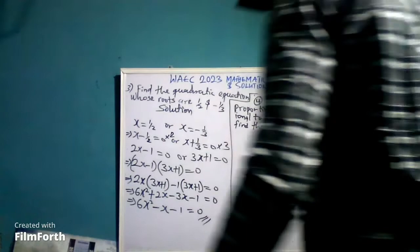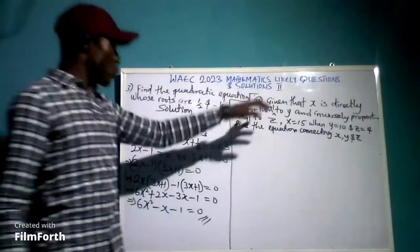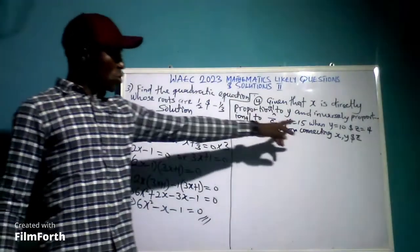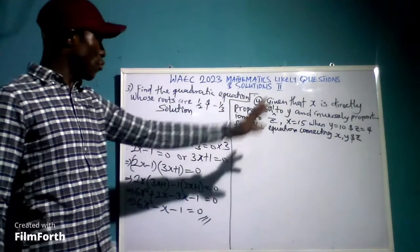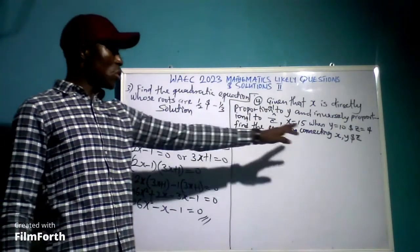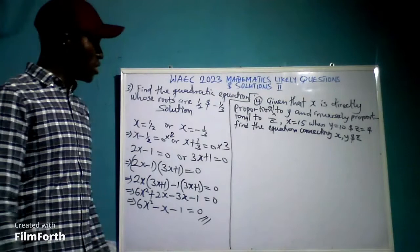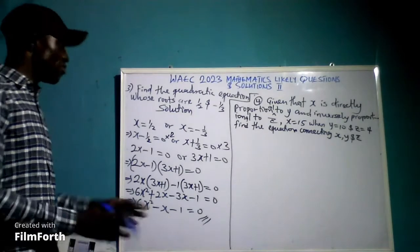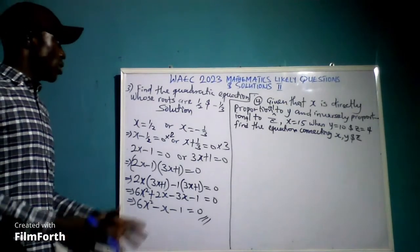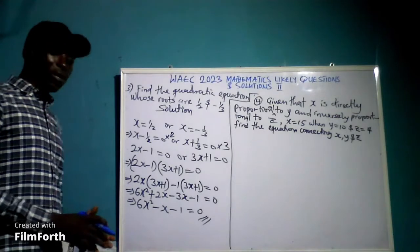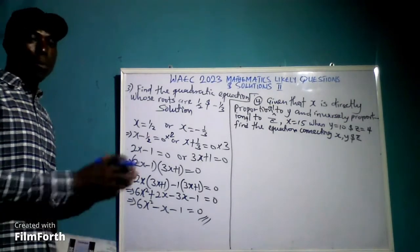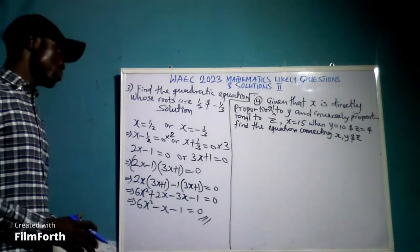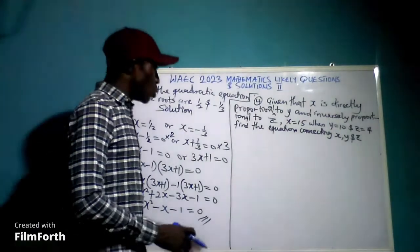Now let's take a look at this question. Given that s is directly proportional to y and inversely proportional to z, and s equals 15 when y equals 10 and z equals 4, we are asked to find the equation connecting s, y, and z. This is a question under proportion — combining both direct and inverse proportion.